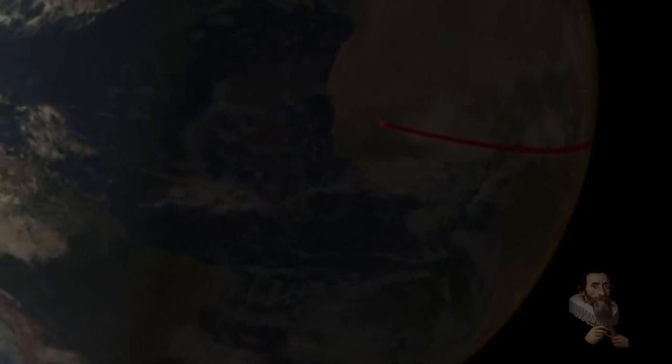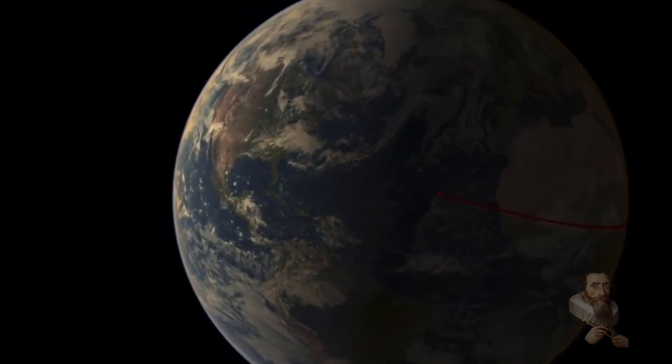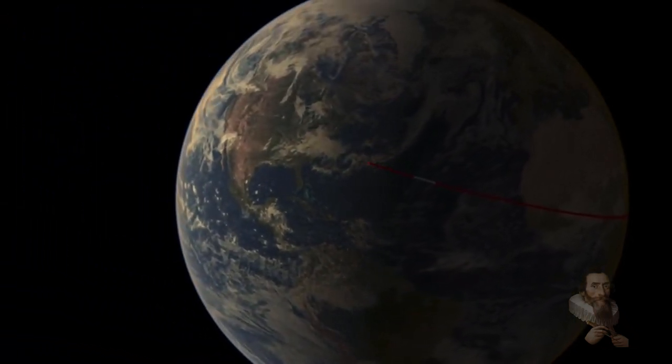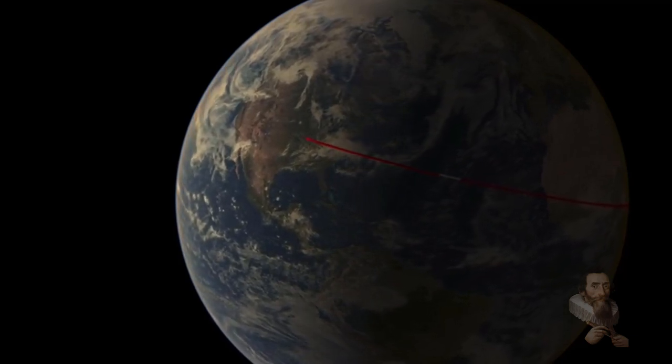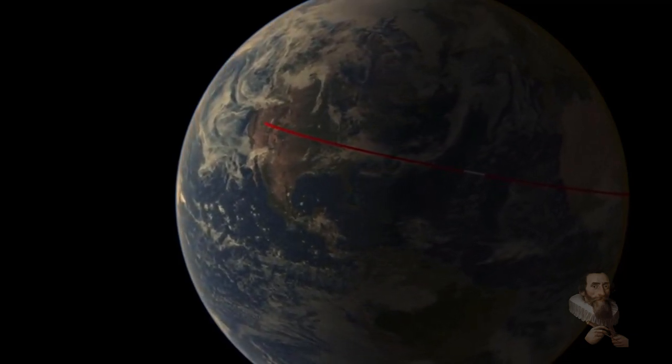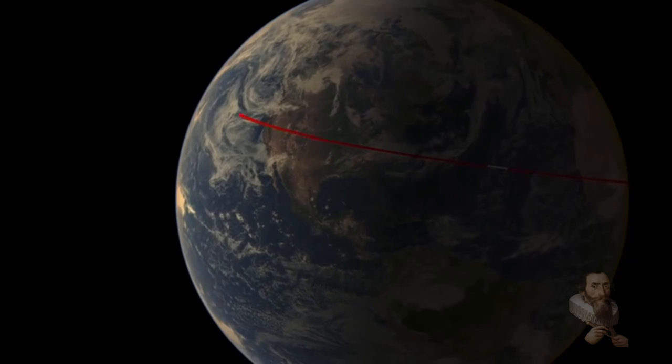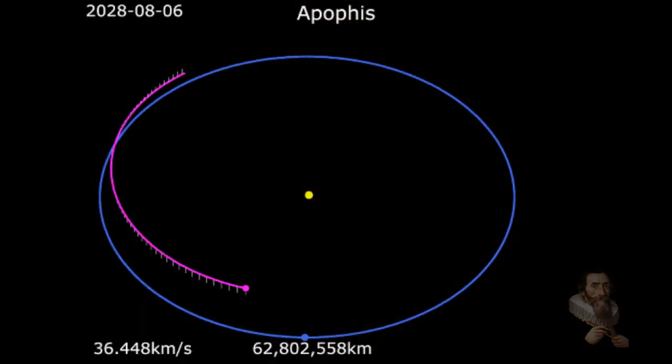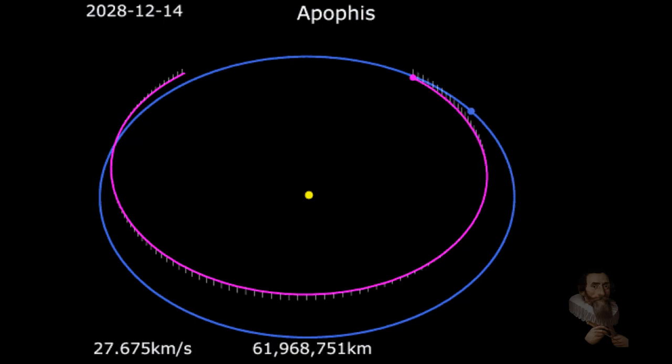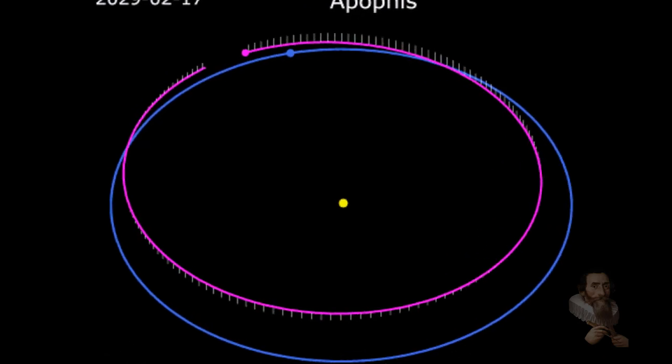On April 13th, 2029, which happens to be Friday the 13th, something very unsettling will happen. A massive asteroid, the 1,100 foot wide Apophis, will pass so close to the Earth that it will be visible in the sky all around the world. It won't strike our planet on this occasion, but it will pass closer than 20,000 miles from the surface, eye-wateringly close, and we will see it in eight years.